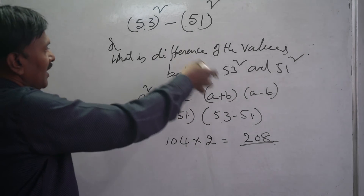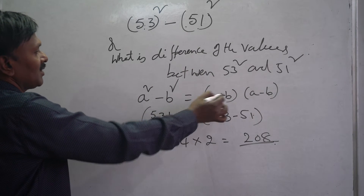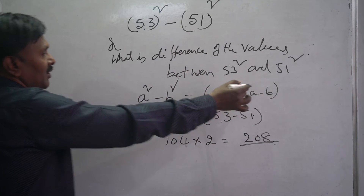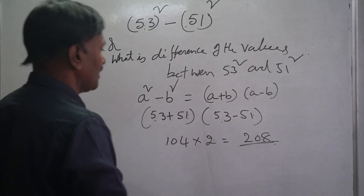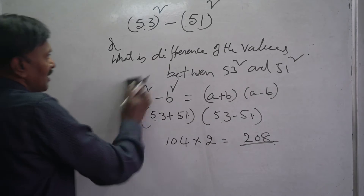So we can solve such types of problems with the help of the formula: a square minus b square equals a plus b into a minus b. We will see one more example.